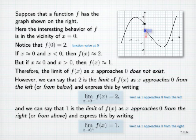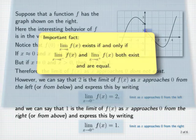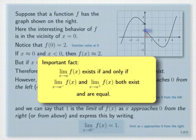This example illustrates a very important fact about limits. The limit of f of x as x approaches some number a exists if and only if both of the one-sided limits as x approaches a exist and coincide. That is, if and only if f of x approaches the same number as x approaches a from both the left and the right. When this happens, the limit equals the common value of the one-sided limits.